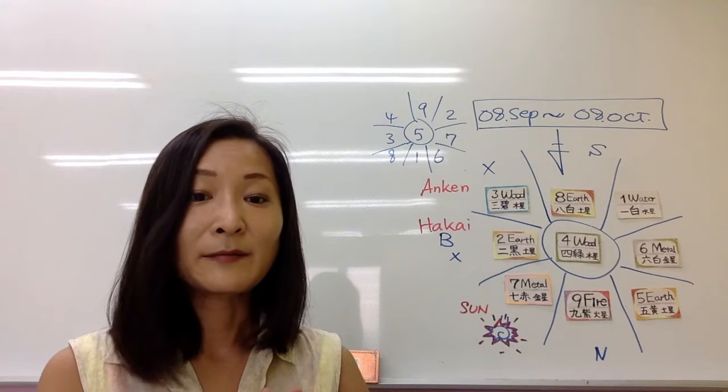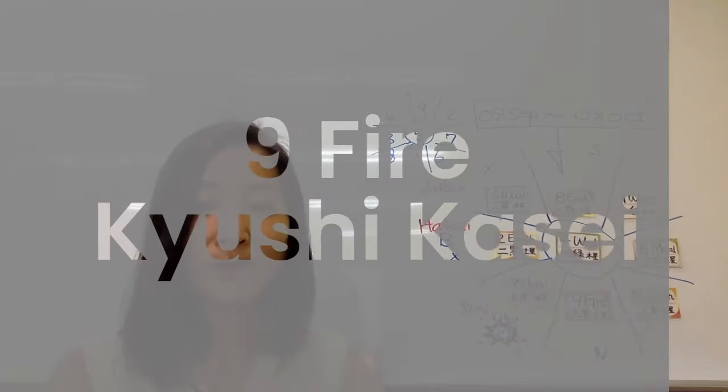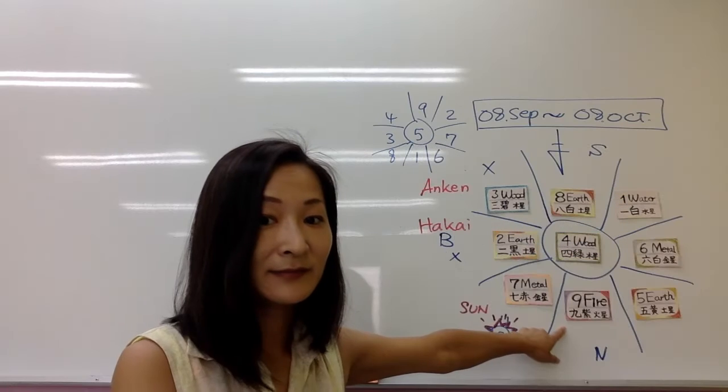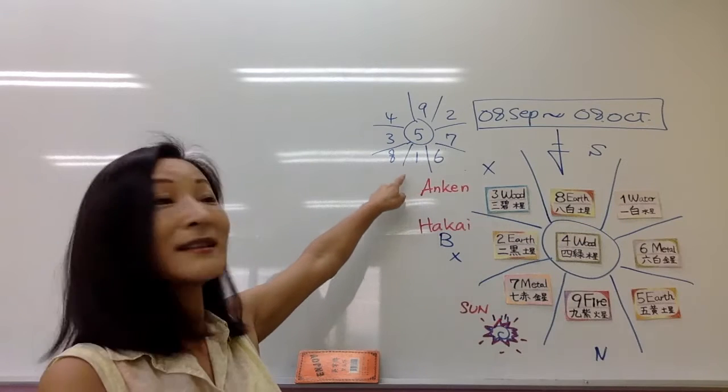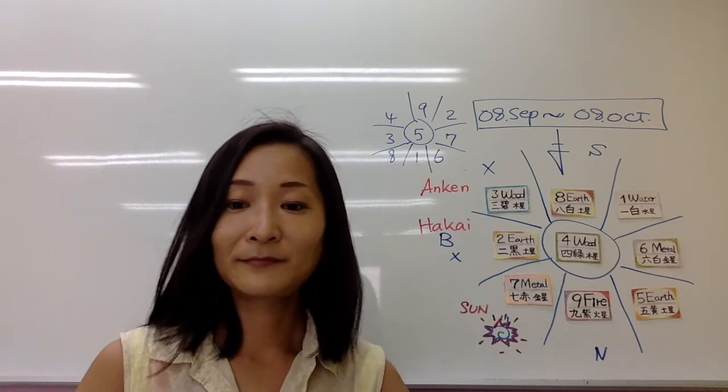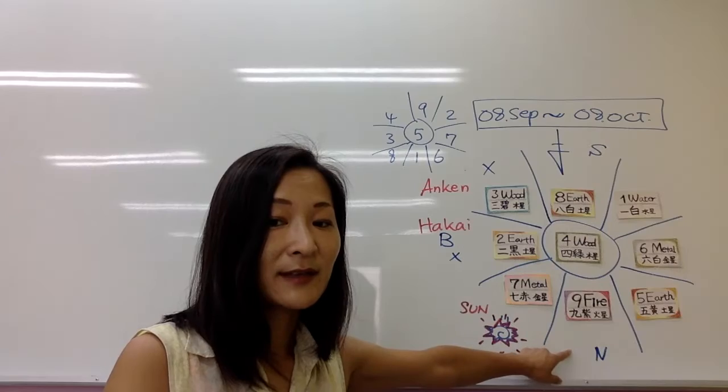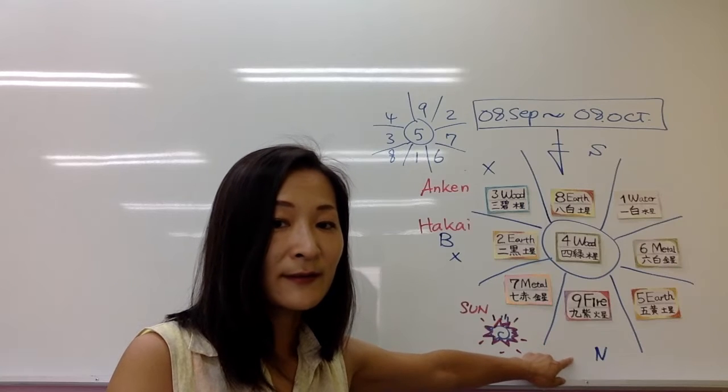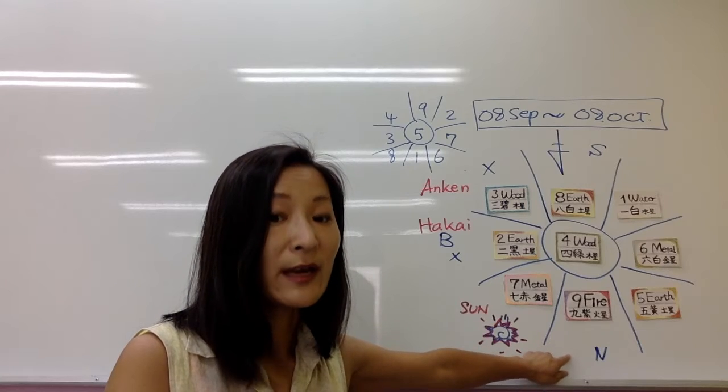Okay, then last, let's move to 9 fire, Kyushi Kasei. Kyushi Kasei is on the one quarter, so it's on the north, very cold area.